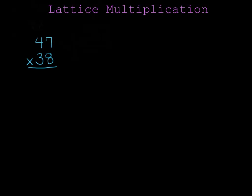Hi. In this video, I'm going to show you how you can multiply a two-digit number times a two-digit number using lattice multiplication. The problem we'll do today is 47 times 38. If you've never multiplied numbers this large before, that's actually great, because lattice multiplication is the easiest way to do these kinds of problems. First of all, let me show you the lattice.